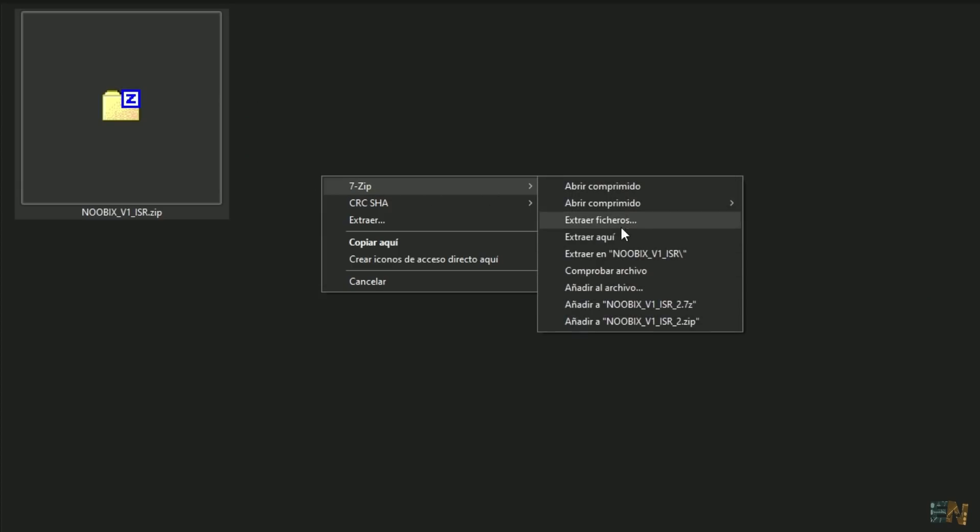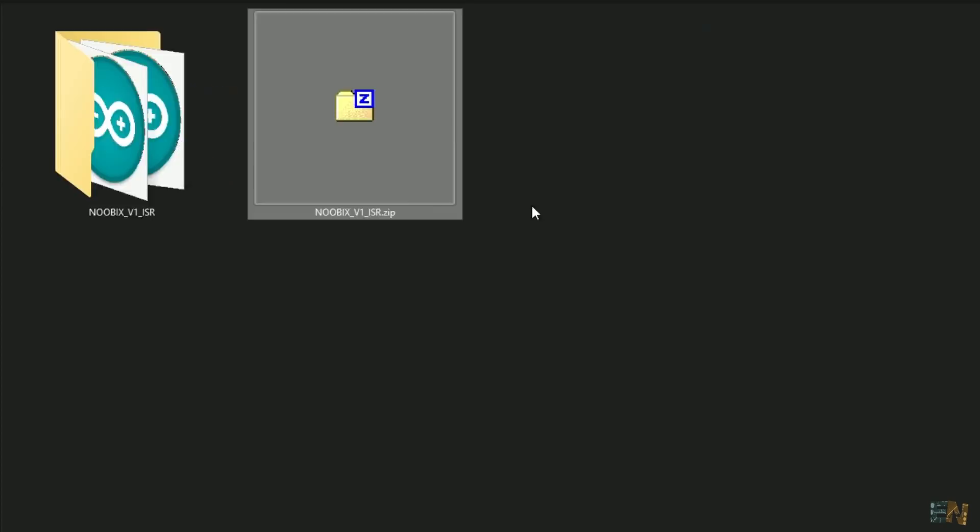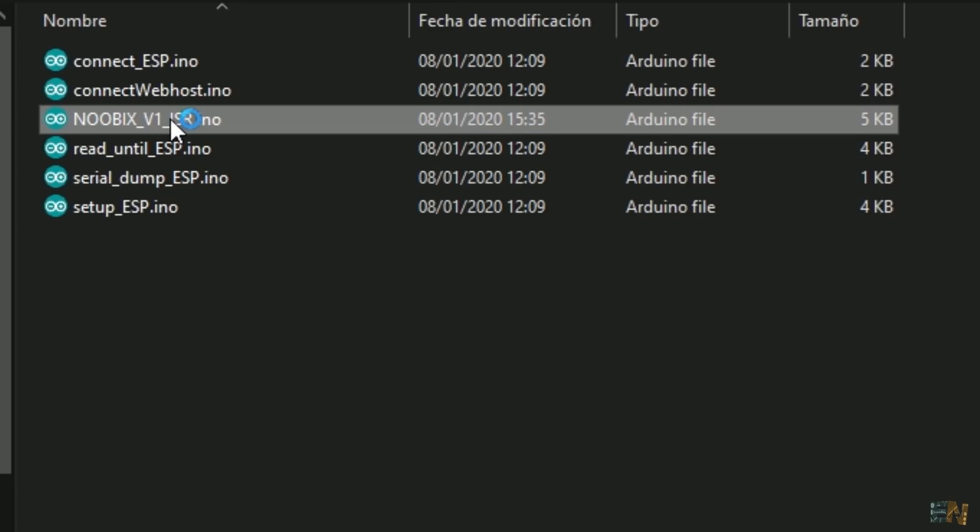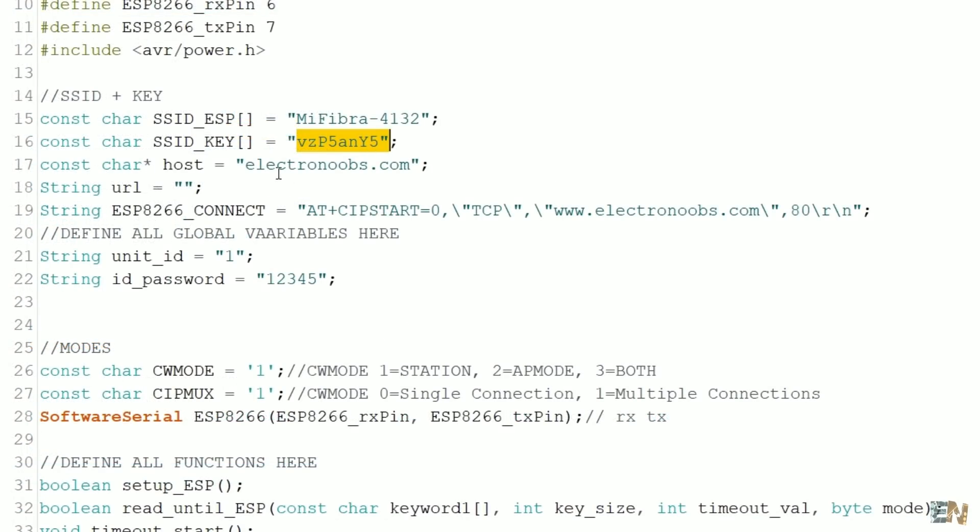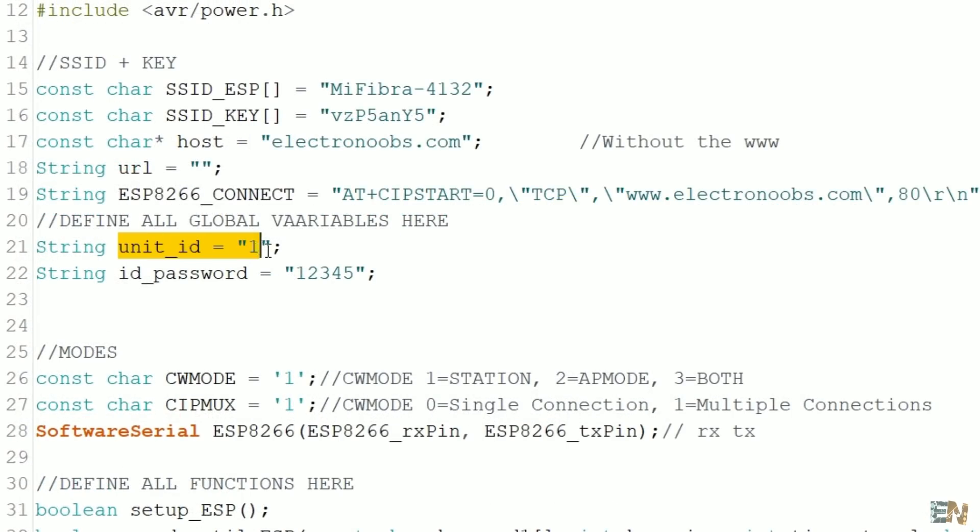Okay, now go below and download the Arduino code. Open the Noobix V1 code. First you have to change these lines here for the Wi-Fi name and password. Then you have to change the domain from electronoobs.com to your own domain but don't include the three Ws. Change that here as well but this time with the three Ws. Now change the unit ID and password that you have inserted in the database table. If you remember, in my case I had ID 1 and the password 12345.